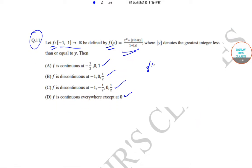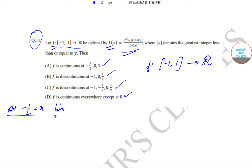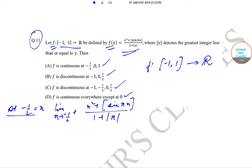So what we have been given is that f goes from minus 1 to 1 to the real numbers. Now let's check at x = -1/2. So the right-hand limit as x tends to -1/2⁺ gives us x² + ⌊sin(πx)⌋ upon 1 + |x|. Now as x tends to -1/2 from the right, x lies between -1/2 and 0, so |x| = -x.